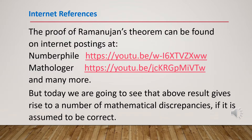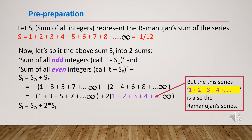The proof of Ramanujan's theorem can be found on a number of internet sites, but today we are going to see that the above result gives rise to a number of mathematical discrepancies if it is assumed to be correct. Let SI, the sum of all integers, represent Ramanujan's sum: SI equals 1 plus 2 plus 3 plus 4 plus 5 plus 6 plus 7 plus 8, etc., up to infinity, equals minus 1/12.